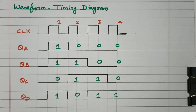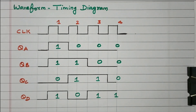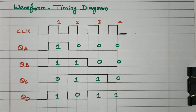In this video we discussed the Parallel In Serial Out type of digital register, the logical diagram, and the two modes available: parallel loading and shifting. The operation is controlled by one NOT gate and a logic circuit of two AND gates and one OR gate, based on the value — zero means parallel loading, one means shifting. We also discussed the truth table for both loading and shifting, and the waveform/clock diagram.